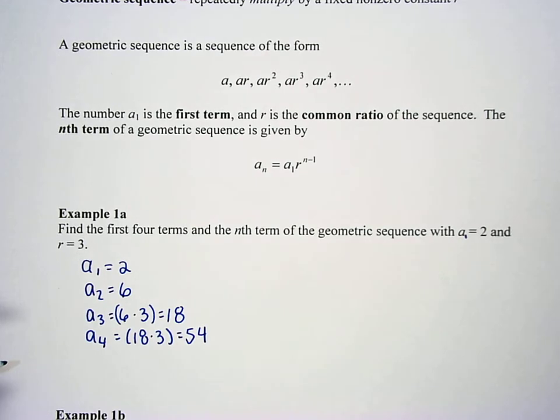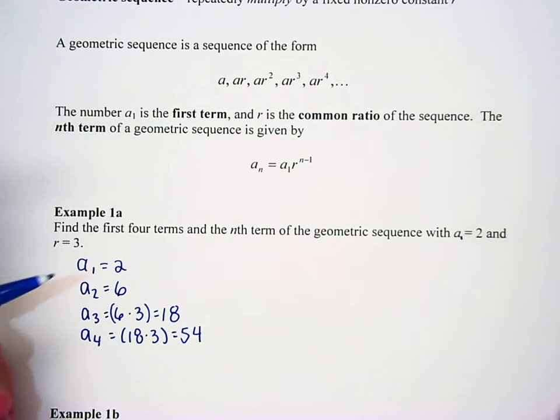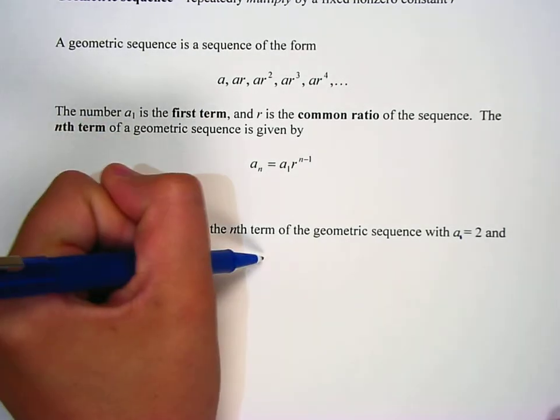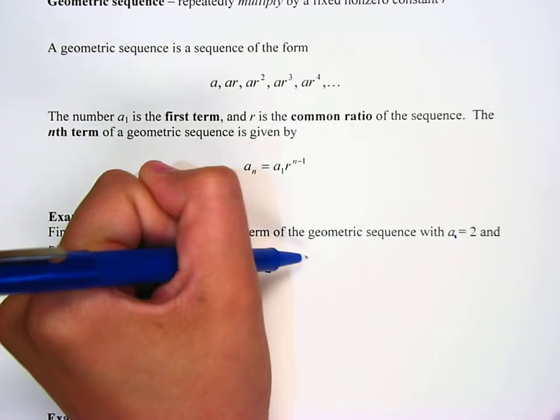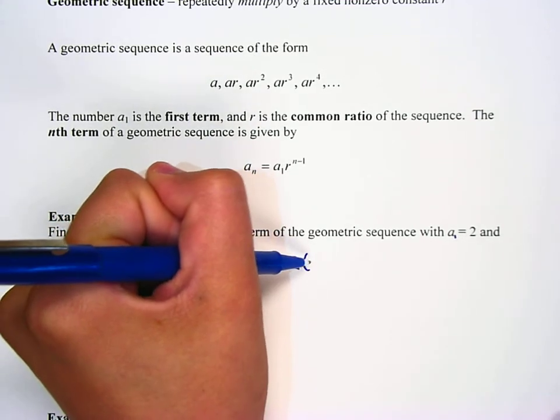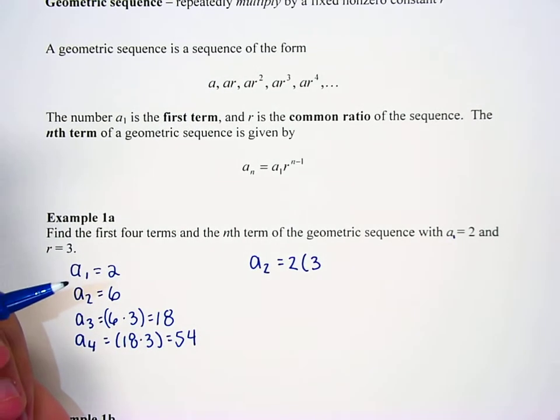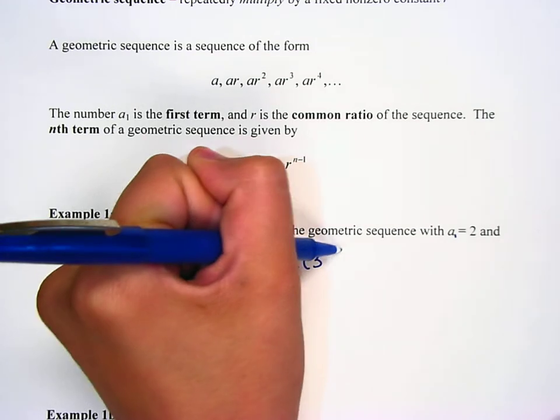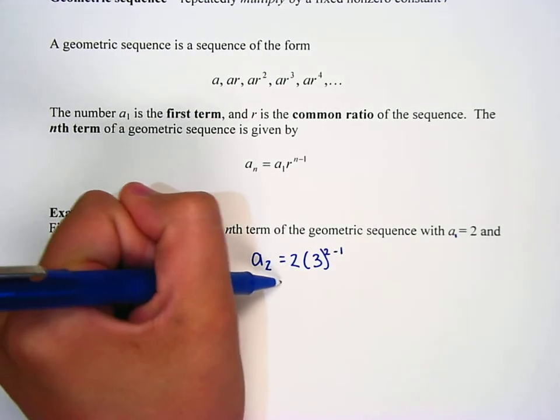Now you could have also used the formula that we have up here if you wanted to and plug them in. So let's just do that for like the second and third term. Write a sub 2 just over here on the right there. A sub 2 equals, now the first term is 2, so write 2 times 3 because that's our common ratio, raised to the 2 minus 1. Close the parentheses. 2 minus 1 is 1, so that's 3 to the first, so 2 times 3 to the first, which is 6.